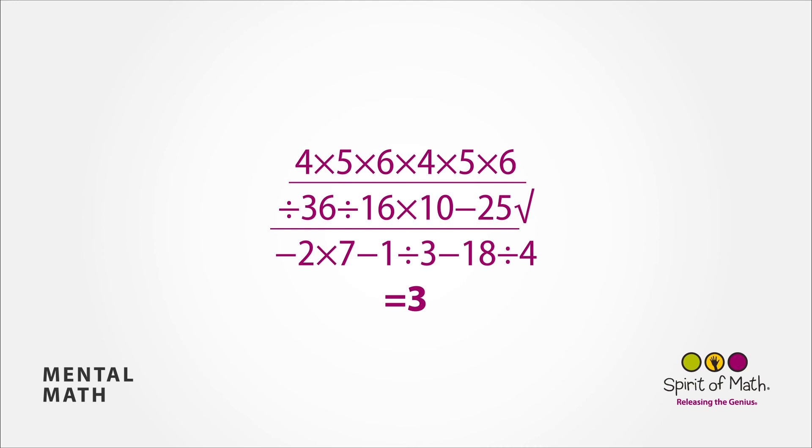Subtract 25 gives you 225. The square root of that number is 15. Subtract 2 gives you 13. Multiply that by 7 is 91. Subtract 1 is 90. Then divide it by 3 gives you 30.